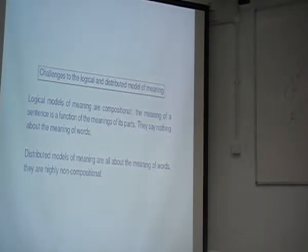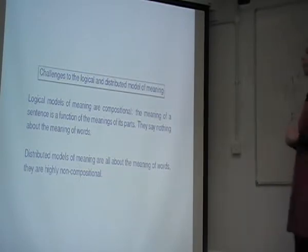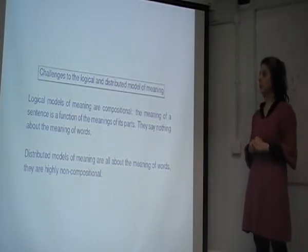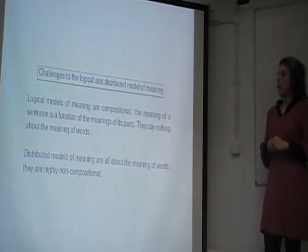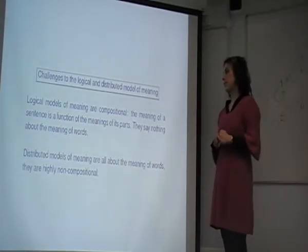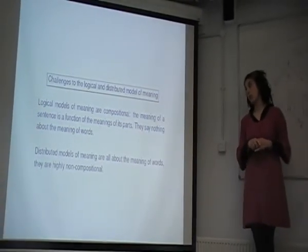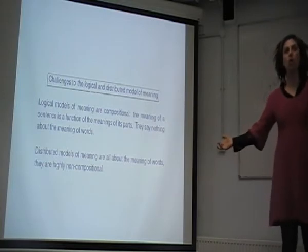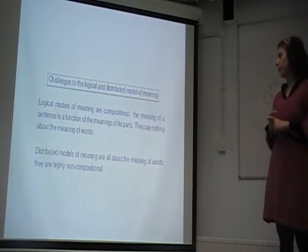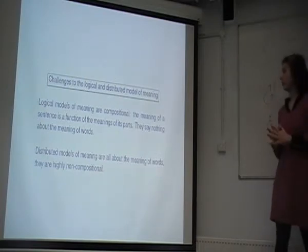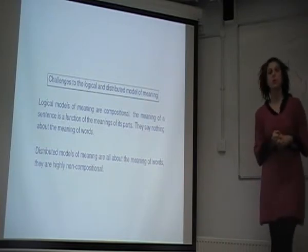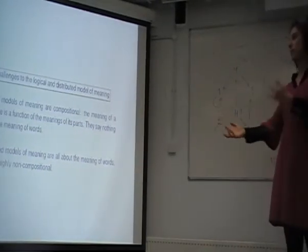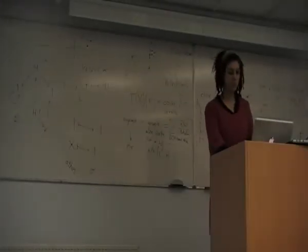Let's think about meaning. There have been two major schools for providing meaning: the logical model of meaning and the distributed model of meaning. They each have their own pros and cons. Logical models of meaning are highly compositional. The meaning of a sentence is a function of the meaning of its constituents. However, they say nothing about the meaning of words. The distributed model of meaning does very well on the meaning of words, but they're highly non-compositional. How to get the meaning of a sentence from the vectors that are meanings of the words is really a dark area, not well studied yet.